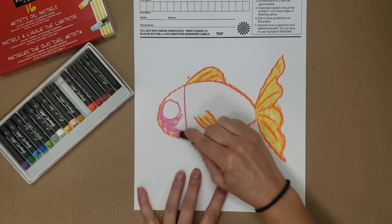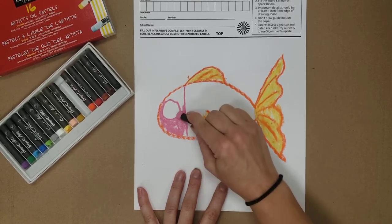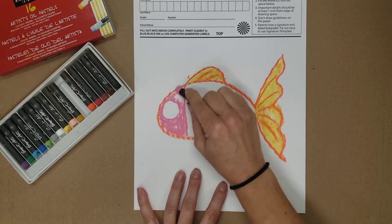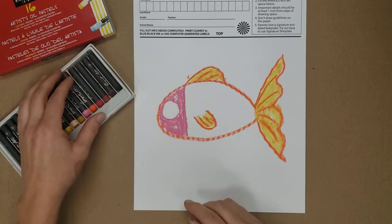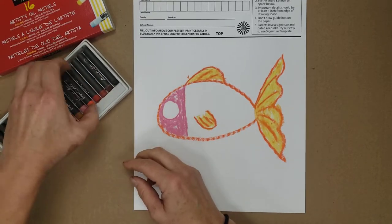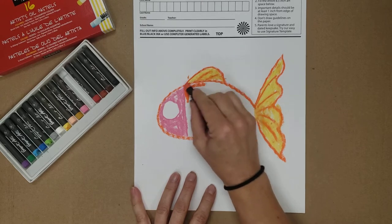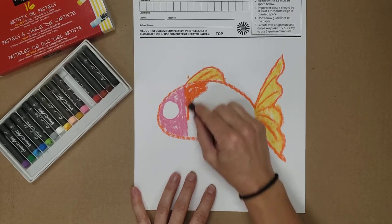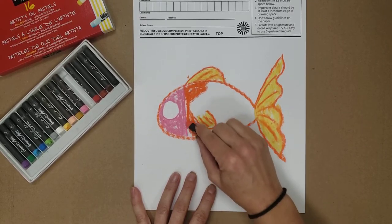Then maybe the body itself I'll do orange because it is kind of a goldfish, but you can do whatever color you want because that's going to be your project. Your fish could be blue or red or green, that's your decision.